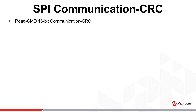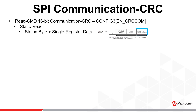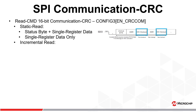The next topic of discussion is the read command 16-bit SPI communication CRC. The 16-bit communication CRC is appended to the end of each static or incremental read command when the CRC COM enable bit of the Config3 configuration register is set. For a static read command, the CRC value is appended after each single register read. The first CRC value generated following a chip select falling edge for a static read will include the current contents of the status byte. However, if data streaming is performed, the CRC value calculated for each subsequent read will include the current value of the ADC data register only.